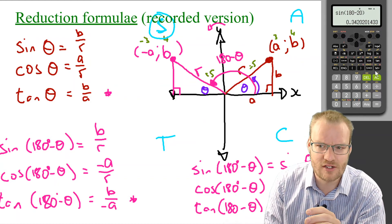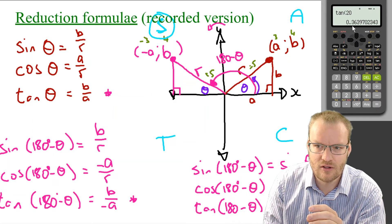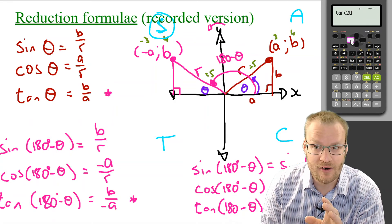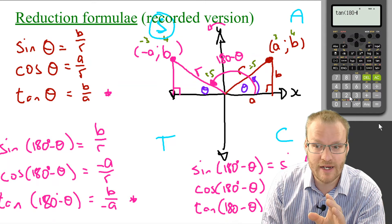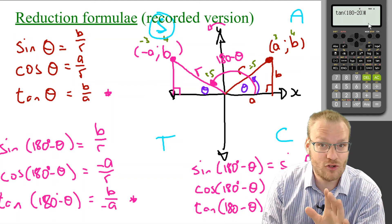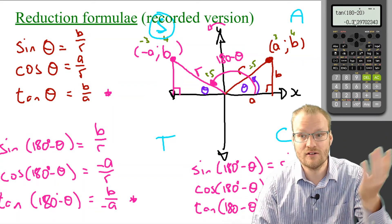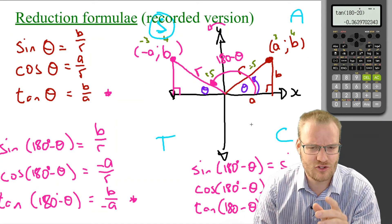So, let's use 20 degrees again. Tan of 20 degrees. 0.36. Okay. Now, the suggestion is tan of 180 minus 20. Should be the same thing, 0.36, but it should be negative. There it is. So, that's where the calculator is just a nice little crutch to check as well.